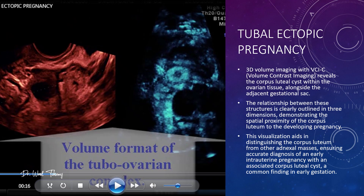Here is a 3D volume scan using virtual contrast imaging on plane C, VCI-C. Look closely — you can see the corpus luteal cyst within the ovarian tissue right next to the gestational sac. The three-dimensional view clearly outlines their spatial relationship, showing just how close the corpus luteum sits to the developing pregnancy. This is a great example of how 3D imaging can help distinguish a normal corpus luteum from other adnexal masses, ensuring you don't mistake a normal early finding for an ectopic.